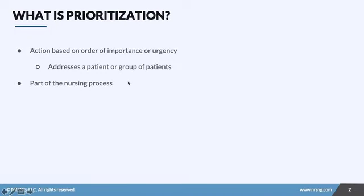We're going to talk about prioritization. As a nurse, it's all about priorities. Prioritization is one of the critical functions we perform when taking care of multiple patients with multiple tasks for each. Prioritization is an action based on order of importance or urgency, and it can affect a patient, multiple patients, or even an organization as a whole. It's part of the nursing process and helps us identify which situation should be addressed first.